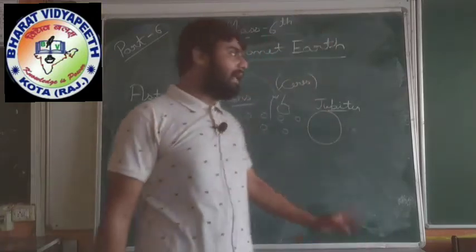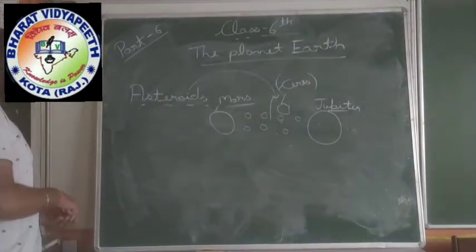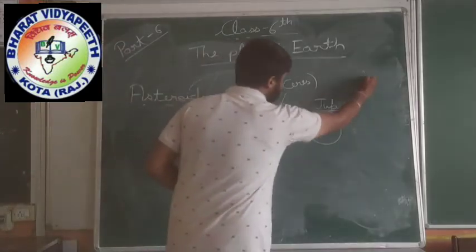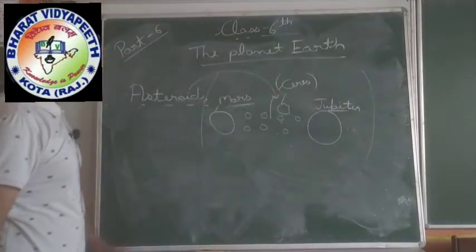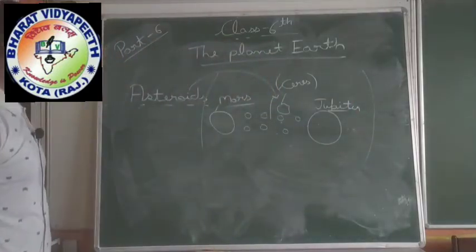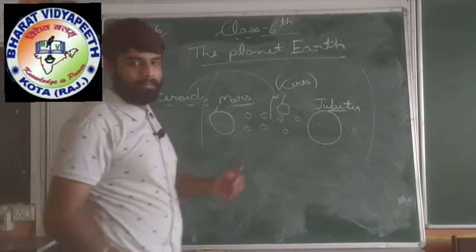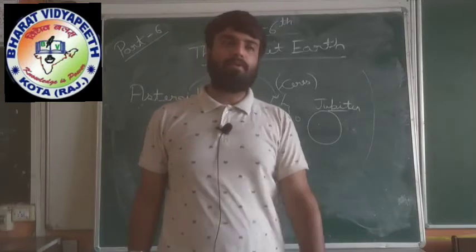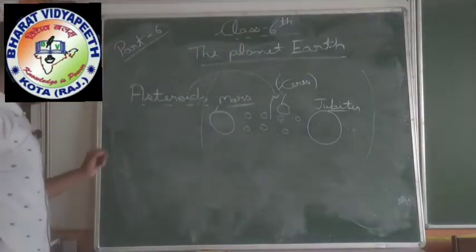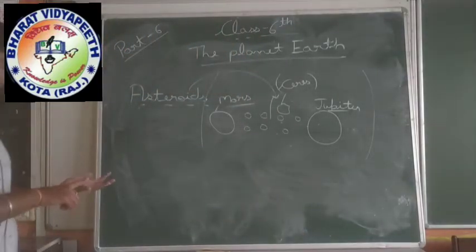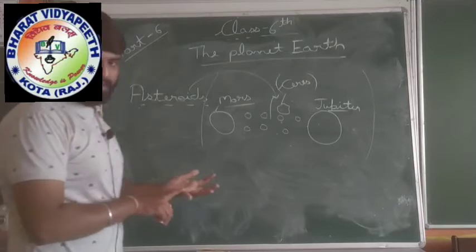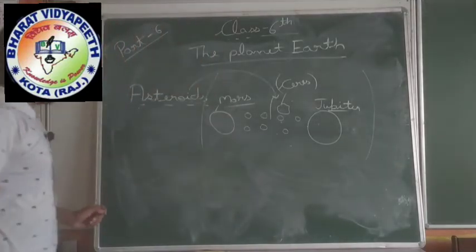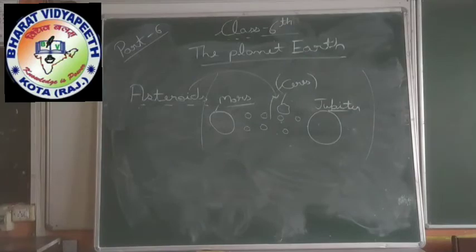Now we will talk about two planets — Mars and Jupiter. Mars is the fourth planet and Jupiter is the fifth planet. I have learned this sequence: Mercury, Venus, Earth, Mars, Jupiter — they are the fourth and fifth planets.